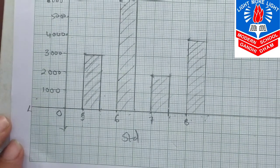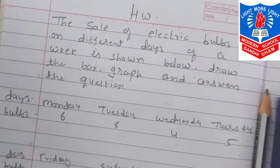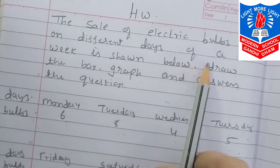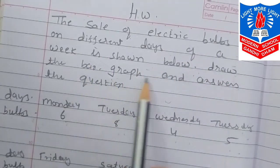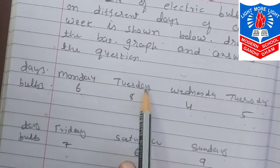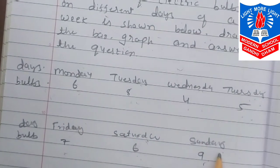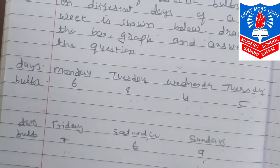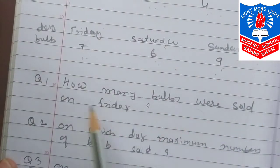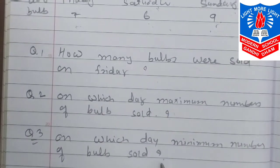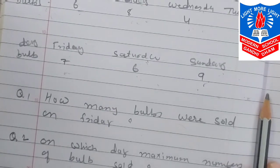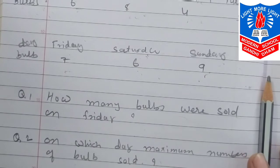For homework, students: the sale of electric bulbs on different days of the week is shown — Monday 6, Tuesday 8, Wednesday 4, Thursday 5, Friday 7, Saturday 6 and Sunday 9. Draw the bar graph and answer: how many bulbs were sold on Friday? On which day was the maximum sold? On which day was the minimum sold? Okay, I have finished this chapter. We will meet in the next chapter with a new video.